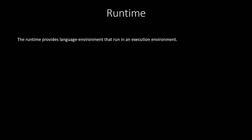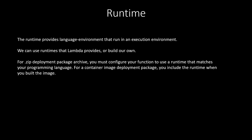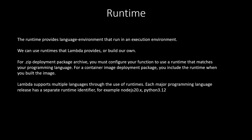Next is runtime. The runtime provides the language environment that runs in an execution environment — it is the environment specific to a language. We can use runtimes that Lambda provides or build our own. For a ZIP deployment package, you must configure your function to use a runtime that matches your programming language. For a container image deployment package, you include the runtime when you build the image. Lambda supports multiple languages through runtimes, and each major programming language release has a separate runtime identifier — for example, nodejs20.x or python3.12. You choose the runtime when you create the function.